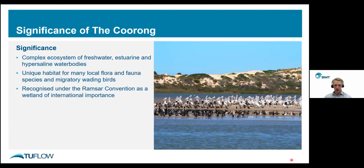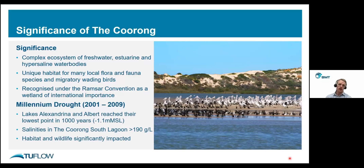The Coorong has a complex relationship between freshwater, estuarine, and hypersaline water bodies. With that comes a quite unique habitat for many local flora and fauna species and migratory wading birds. With this unique combination, the Coorong is recognised under the Ramsar Convention as a wetland of international importance. In Australia, the millennium drought was pretty widespread, and the Coorong was no stranger to its impacts, lasting almost a decade.